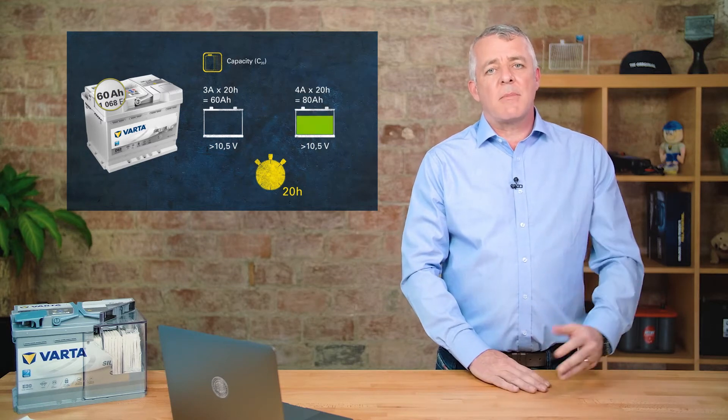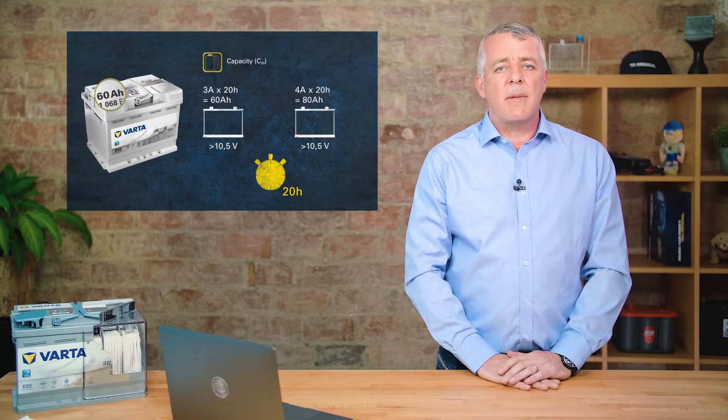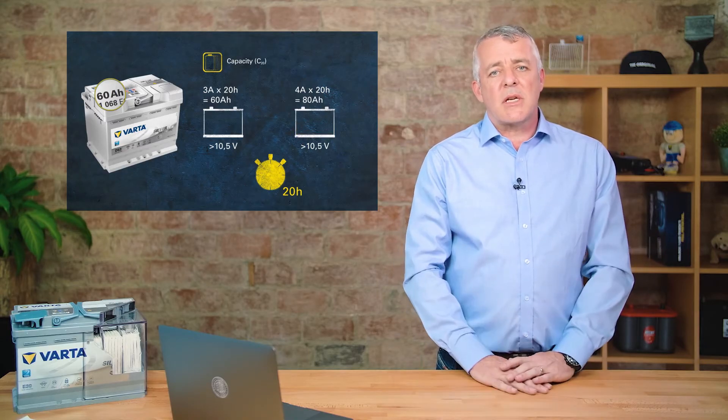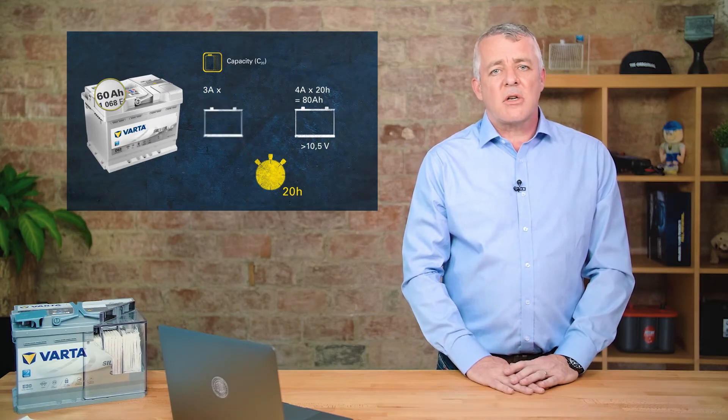The same would happen if it was 4 amps over 20 hours - it would then be an 80 amp hour battery. Now this never used to be so important for older cars; they didn't need much capacity in the battery.